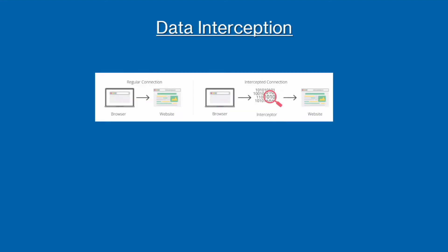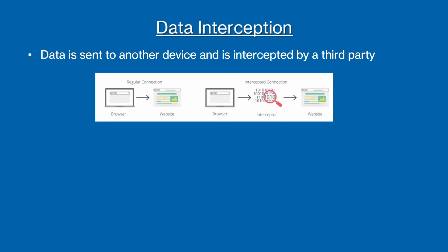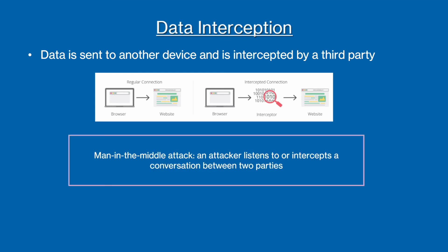Data interception is where data is intercepted by a third party when being sent over a network. For example, if I were to send you a message over the internet, e.g. by email, someone could intercept and gain access to this data. There are a couple of different ways that data interception could occur. The method I just mentioned, the same as the picture on the screen, is a man-in-the-middle attack, as an attacker intercepts a conversation between two parties.